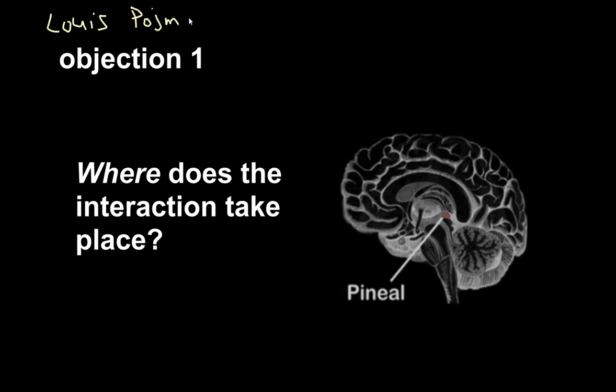And the first objection is this: where does interaction take place? So if mental events cause physical events, and physical events cause mental events, where exactly does this happen?